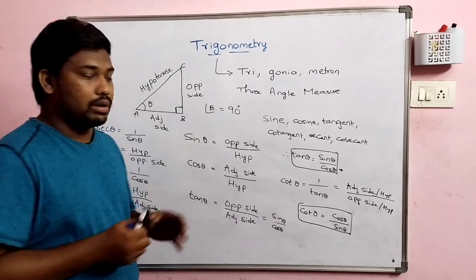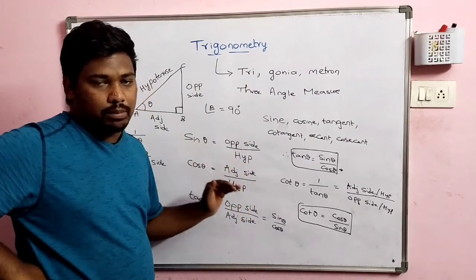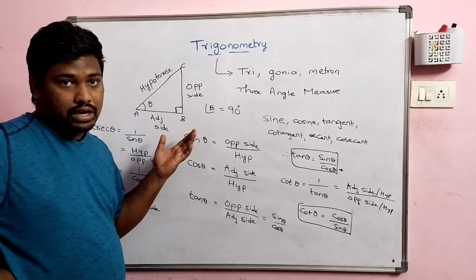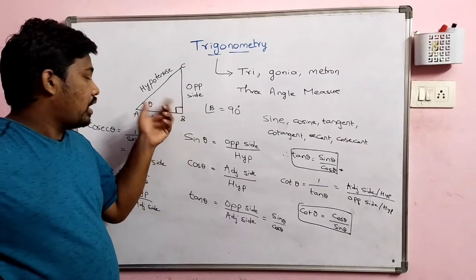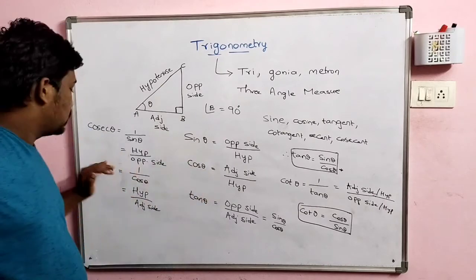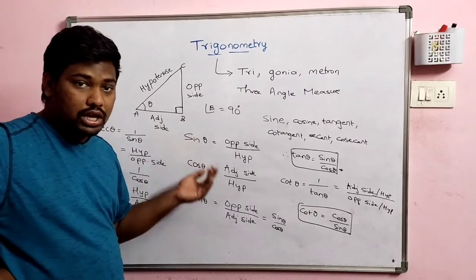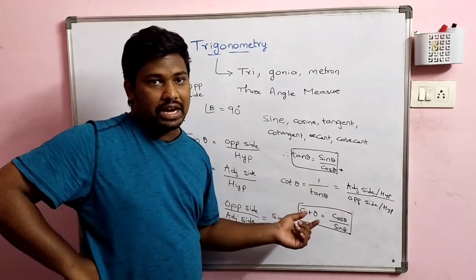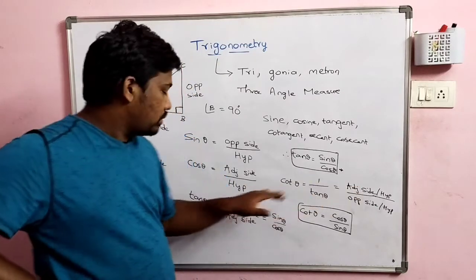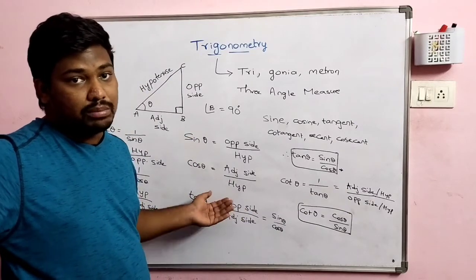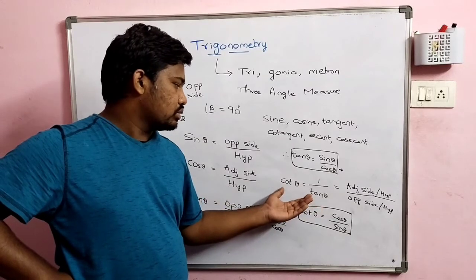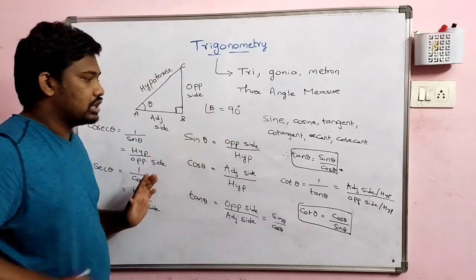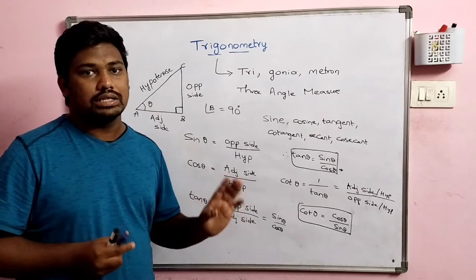So the six trigonometric ratios are: sin θ = opposite / hypotenuse; cos θ = adjacent / hypotenuse; tan θ = opposite / adjacent. Cosecant θ = 1 / sin θ = hypotenuse / opposite; secant θ = 1 / cos θ = hypotenuse / adjacent; cot θ = 1 / tan θ = adjacent / opposite. These are the six basic trigonometric ratios and they are very important.